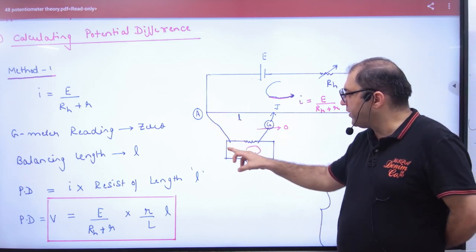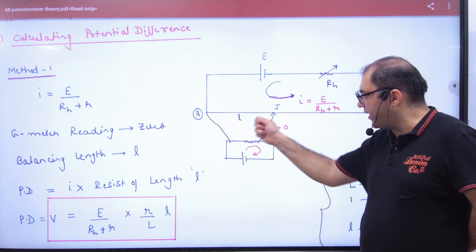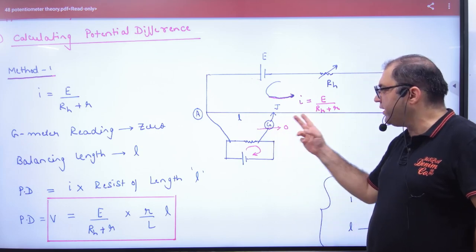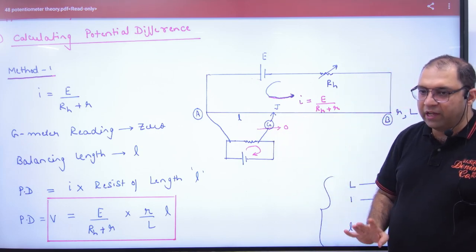So you will cross-connect two ends of the potentiometer and balance it so that the galvanometer's reading will be zero.